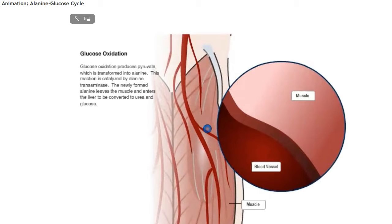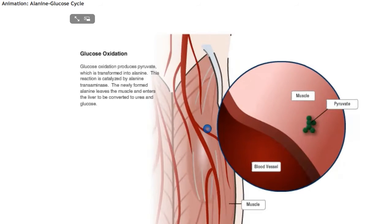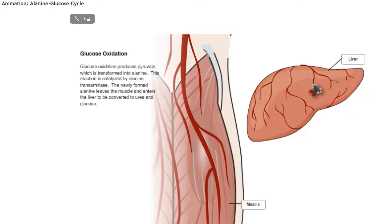Glucose oxidation produces pyruvate, which is transformed into alanine. This reaction is catalyzed by alanine transaminase. The newly formed alanine leaves the muscle and enters the liver to be converted to urea and glucose.